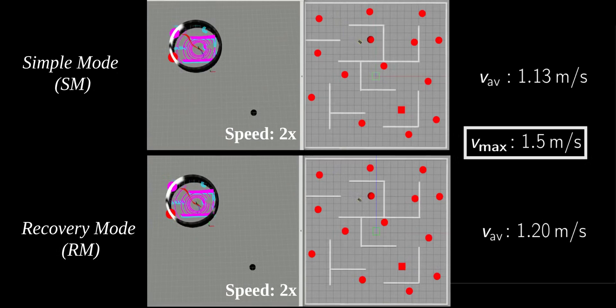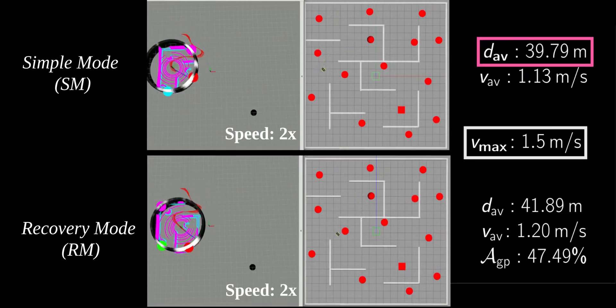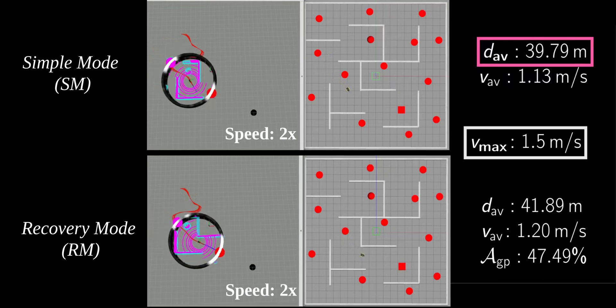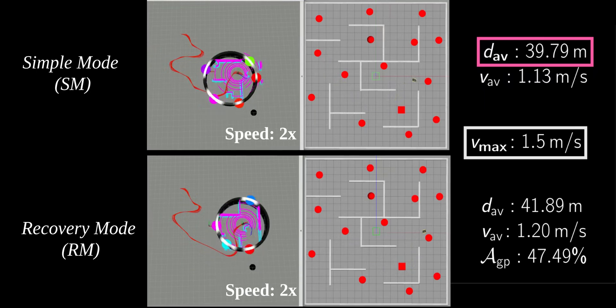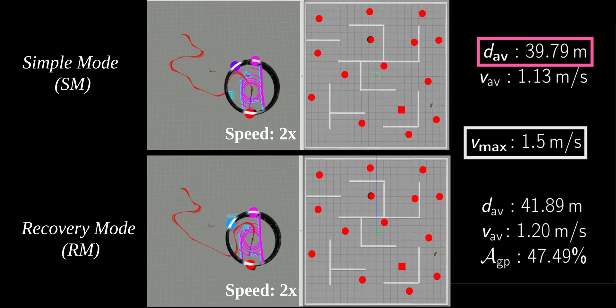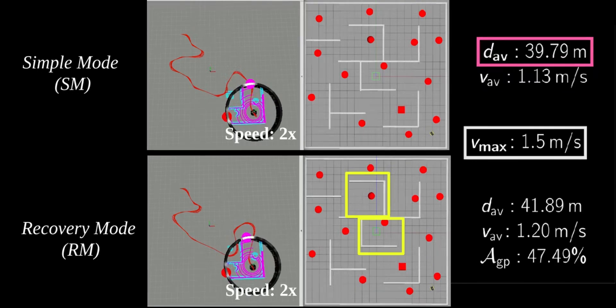During this mission, the recovery mode produced a slightly longer robot trajectory than the simple mode, since operating our proposed approach in the recovery mode strikes a balance between the state-dependent cost function directing the robot towards the desired state and the optimal subgoal suggested by the GP policy, which forces the robot to avoid the dead-ends associated with the two rooms on its way to the desired pose.